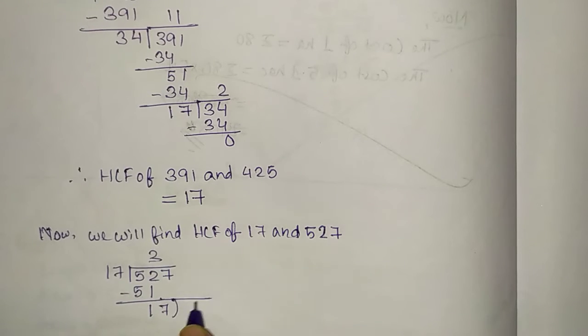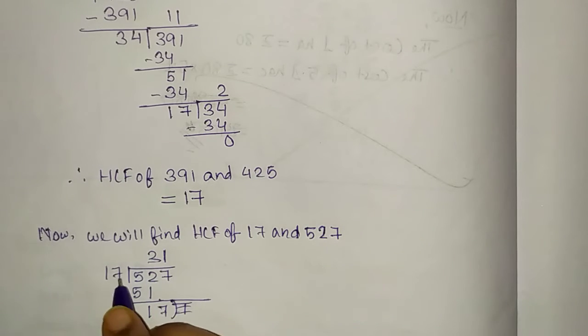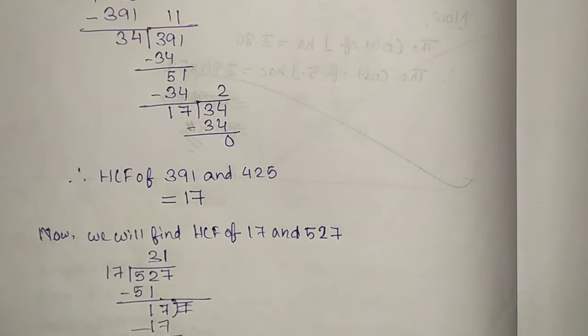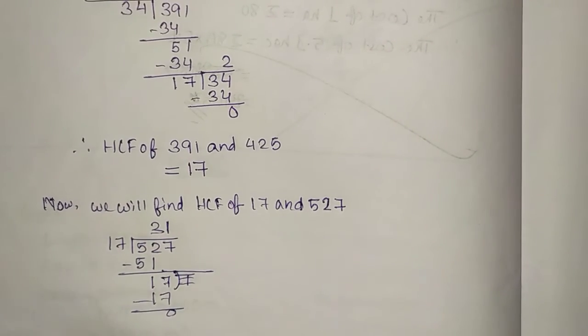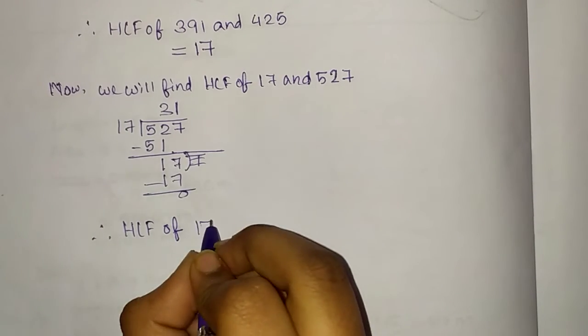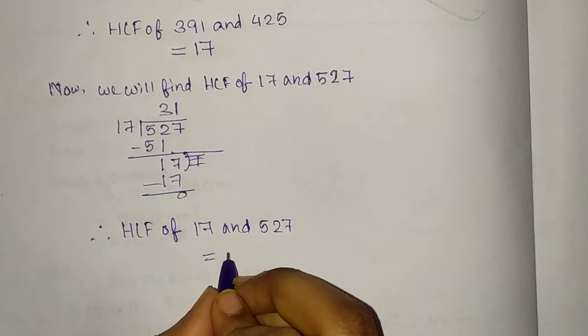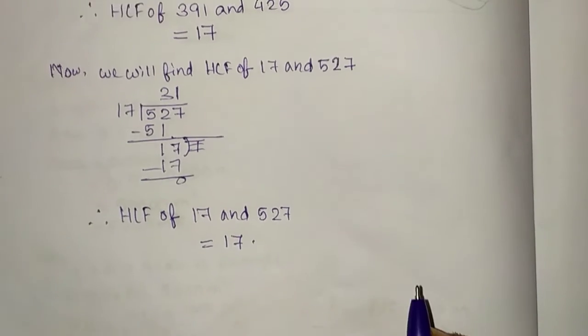Next, we will get quotient 17 again. Here see, 17 times 17. Here, we have found this 17. Here, we can divide, no need to divide in exact way, then 17 minus 0. So, therefore, HCF of 17 and 527 equals 17.